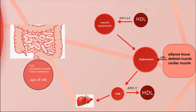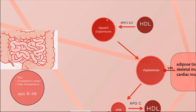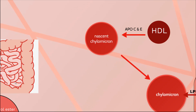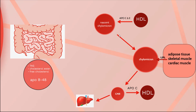In the circulation there is also HDL, which is the kindest lipoprotein — it donates its apoproteins to other lipoproteins when they need it. HDL donates its APO C and APO E to the nascent chylomicron. Now the nascent chylomicron has triacylglycerol, cholesterol ester, free cholesterol, APO B48, APO C, and APO E, and it is totally matured.